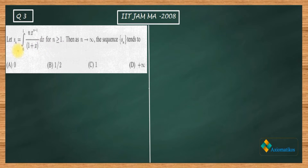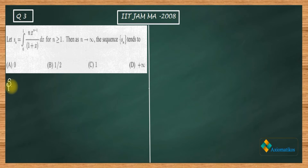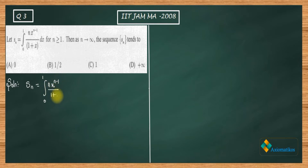Let SN be defined as a complicated integral — as n goes to infinity, the sequence SN tends to what? You need to check whether SN tends to 0, 1/2, 1, or infinity. Now let me write SN properly: SN equals the integral from 0 to 1 of nx^(n-1) over (1+x) dx.